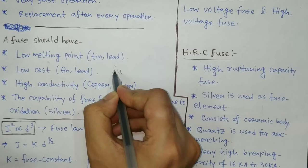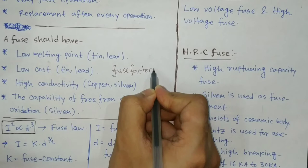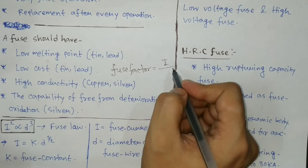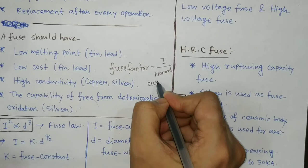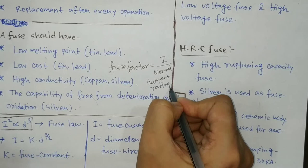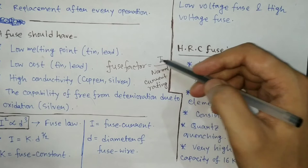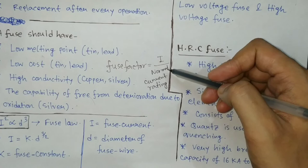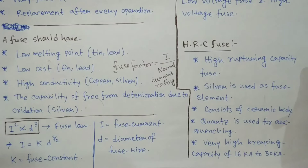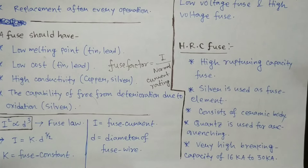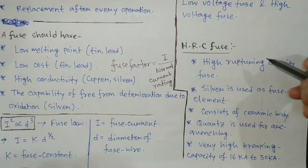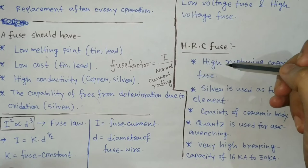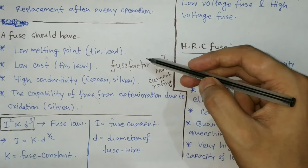There is a term called fuse factor. Fuse factor is I divided by the normal current rating of fuse. Fuse factor is always greater than 1. Normal current rating means the normal current value which the fuse can carry without getting overheated or melted during normal operation. It is always desirable that fuse factor should be as high as possible.